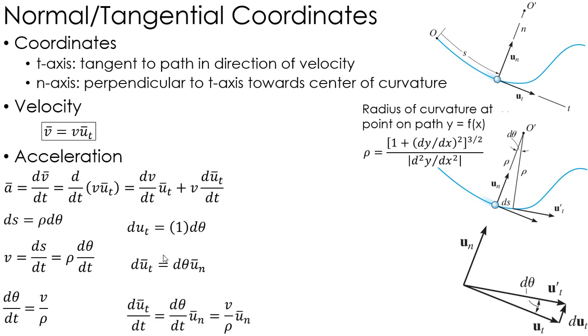Taking a time derivative of this, I can get what I'm looking for, d u_t/dt. d u_t/dt equals d theta/dt times u_n, just basically dividing this equation by dt. Now, over here, I found d theta/dt is just velocity over rho, so I can plug that in here. So, I can find that the time derivative of the tangential unit vector is just v over rho times the unit vector in the normal direction.